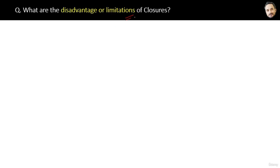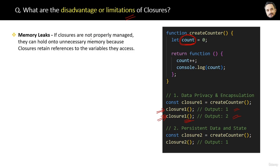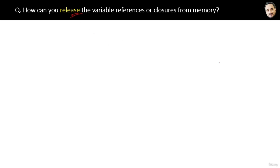What are the disadvantages or limitations of closures? Closures persist and maintain the state of data whenever you call the same closure again and again. If a closure like closureOne is no longer required, it must be released, because data values inside closures persist in JavaScript's memory. The limitation is memory leaks — there is memory occupied that is no use, impacting performance. If closures are not properly managed, they retain references to variables they access, which impacts performance.